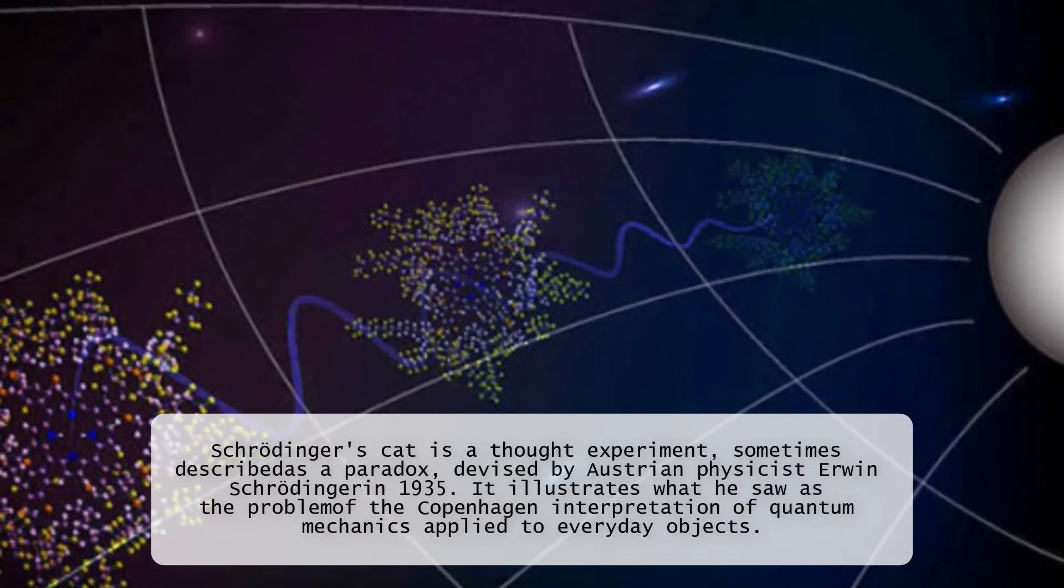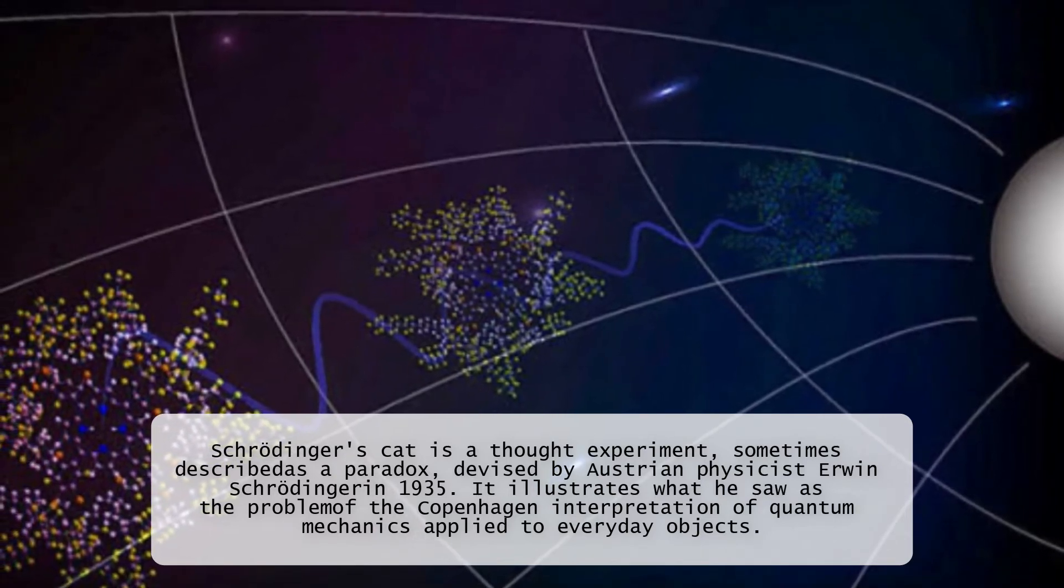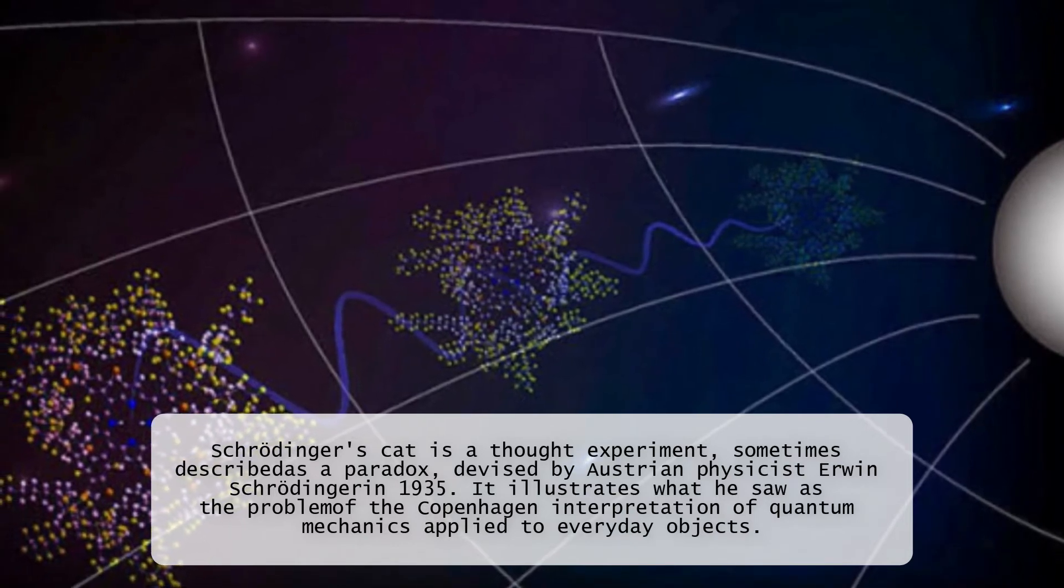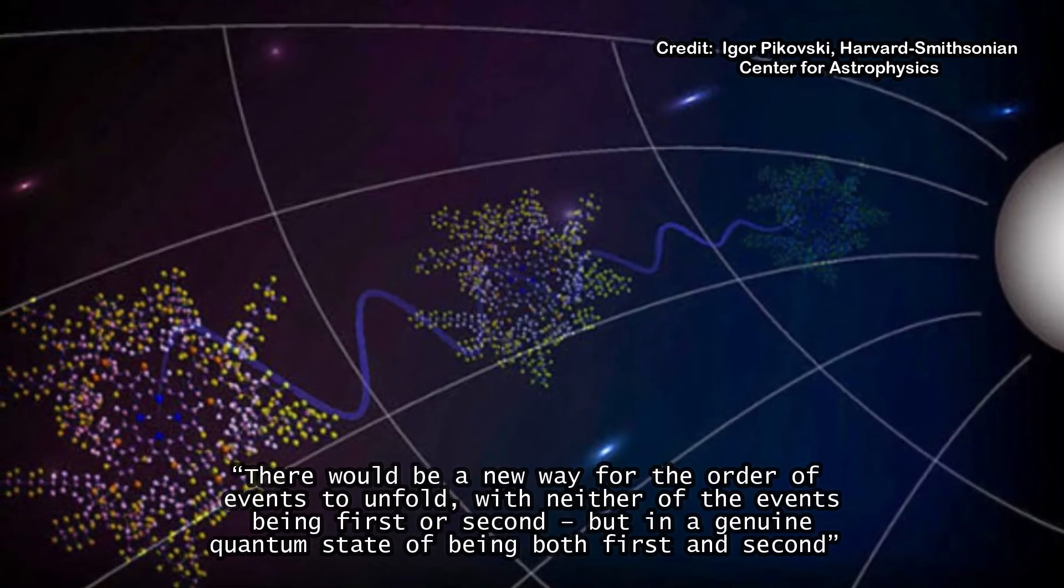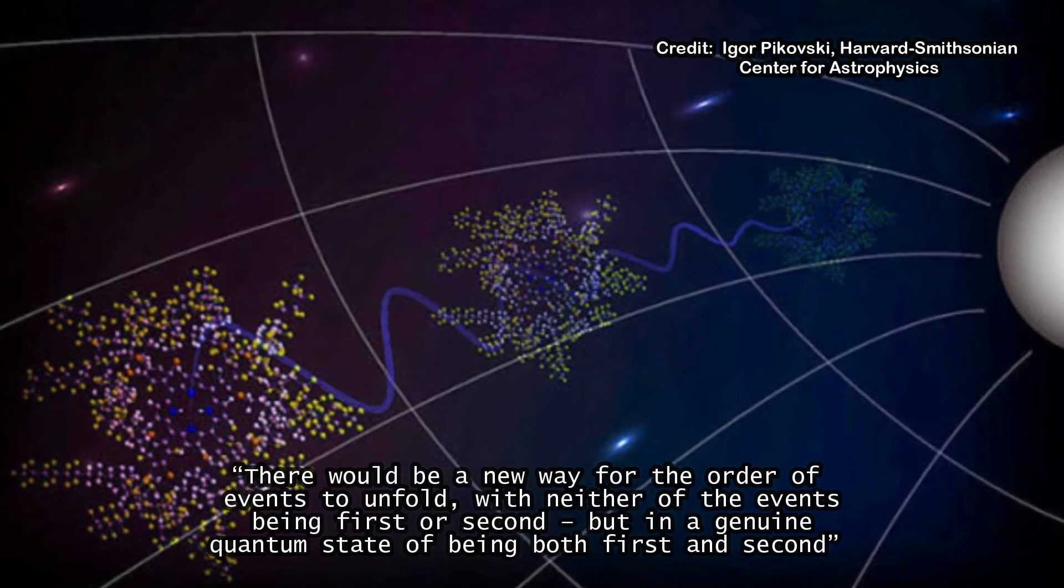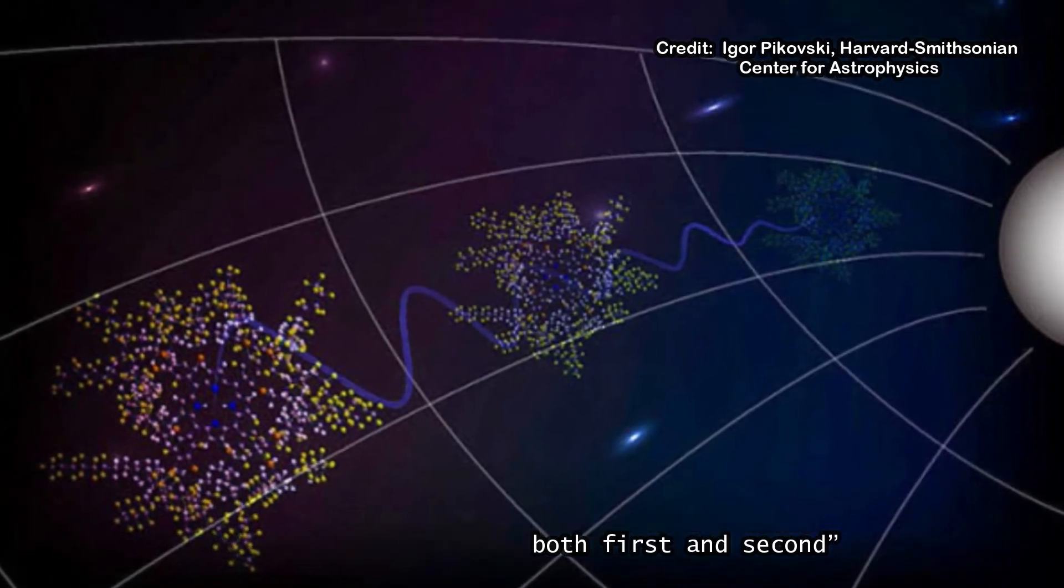Dr. Zeich said using the theory of quantum mechanics, if the enemy put the planet into a state of quantum superposition, then time also should be disrupted. There would be a new way for the order of events to unfold, with neither of the events being first, or second, but in a genuine quantum state of being both first and second, she said.